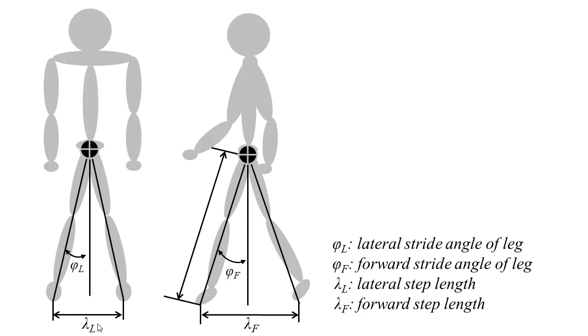Stride length is controlled by the angle between the forward leg and the backward leg, which is twice the forward step length, or two times lambda forward. The stride direction is controlled by pi forward and the lateral stride angle of the leg pi lateral. By controlling pi lateral, an agent can change its movement direction without changing the direction of its whole body.